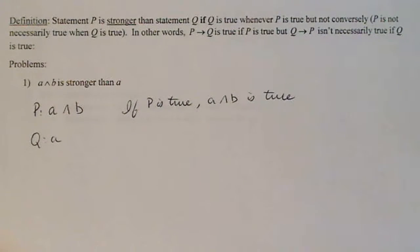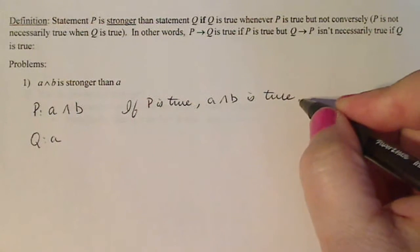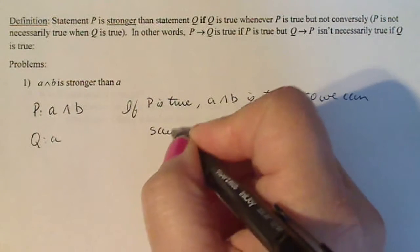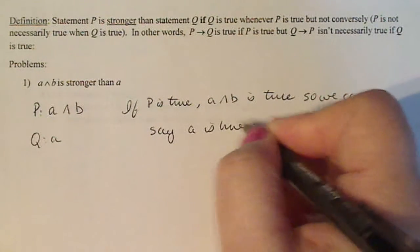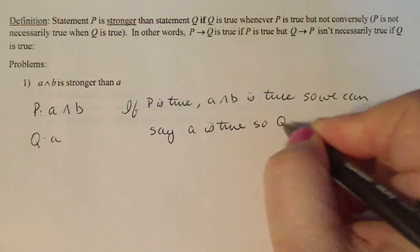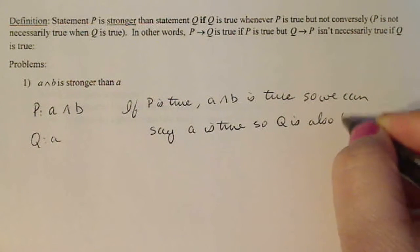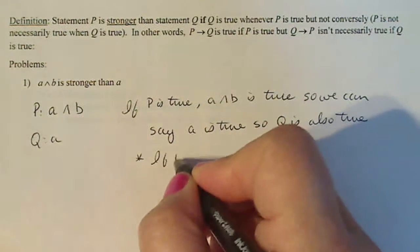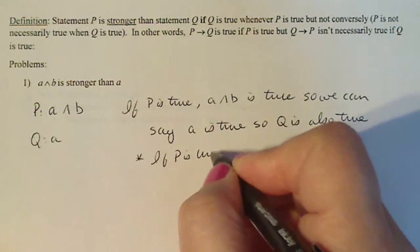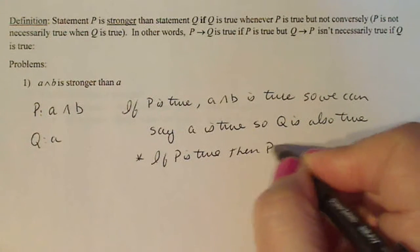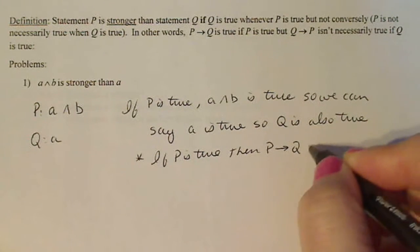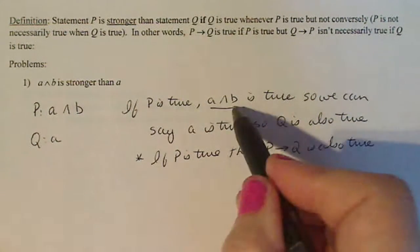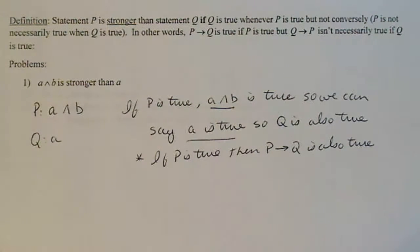That's really important to understand here. If P is true, if P is true A and B is true, so we can say A is true, so the statement Q is also true. So what we showed here was if P is true, then if P then Q is also true, always. If P then Q is true.